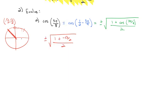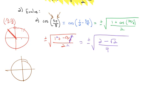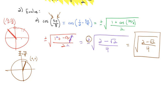We simplify by multiplying top and bottom by 2, giving plus or minus the square root of (2 minus √2) all over 4. To decide plus or minus, we look at the original angle 3π/8. Since π/2 is 4π/8, and 3π/8 is less than that, the angle is in quadrant 1 where cosine (the x-coordinate) is positive. So we take the positive: the square root of (2 minus √2) all over 4. This is our final answer for cosine of 3π/8.